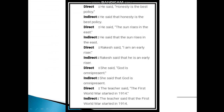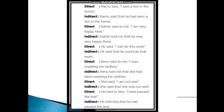Here are some more examples. He said, 'Honesty is the best policy.' He said that honesty is the best policy. He said, 'The sun rises in the east.' He said that the sun rises in the east. Rakesh said, 'I am an early riser.' Rakesh said that he is an early riser. She said, 'God is omnipresent.' She said that God is omnipresent. The teacher said, 'The first world war started in 1914.' The teacher said that the first world war started in 1914. Ramu said, 'I saw a lion in the forest.' So Ramu said that he had seen a lion in the forest.